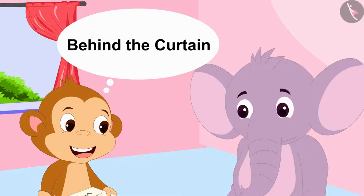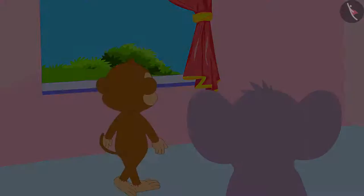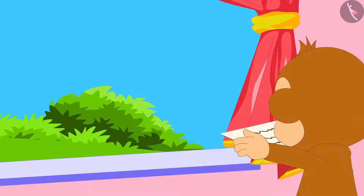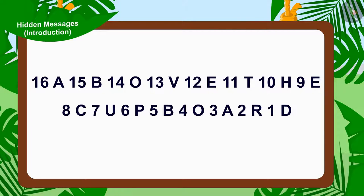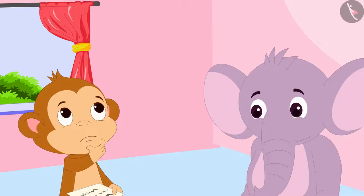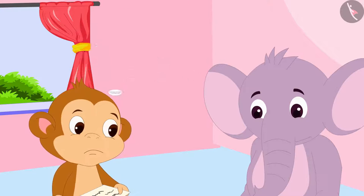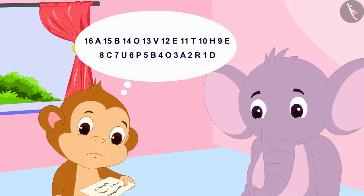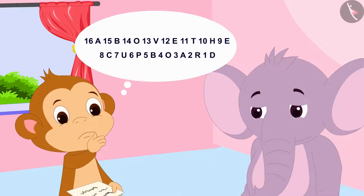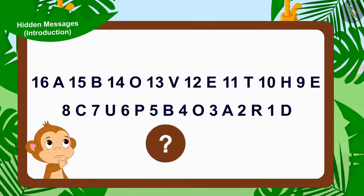This is written in Appu's next letter. Baban got shocked looking at the second letter. He began to think, in the first letter there were only jumbled alphabets, but in this letter there are numbers too. What hidden message could there be in this letter? Children, can you help Baban? Can you see any hidden message in Appu's second letter?